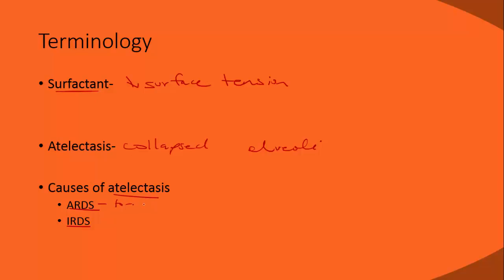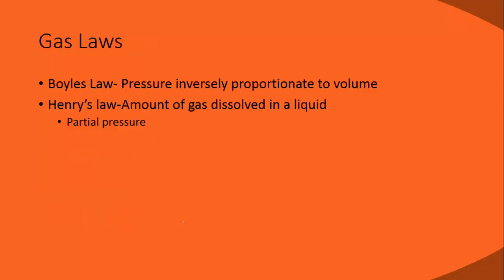Infant Respiratory Distress Syndrome is another cause of atelectasis, occurring when a premature infant hasn't yet produced surfactant, since the lungs are the last organ to develop in utero. There are several gas laws to know. Boyle's law states that pressure is inversely proportionate to volume: if you squeeze a plastic bottle, decreasing its volume, the internal pressure increases.